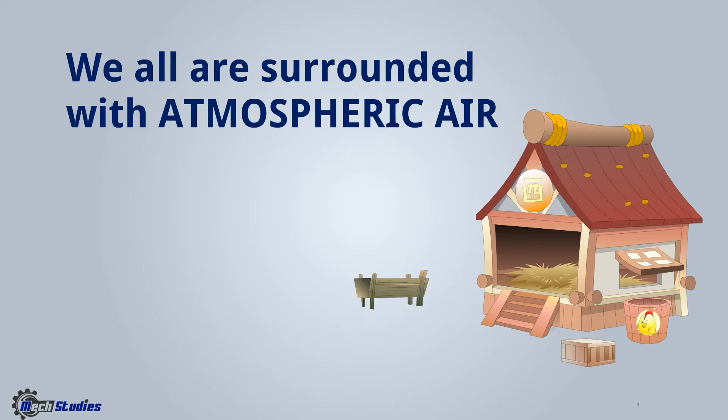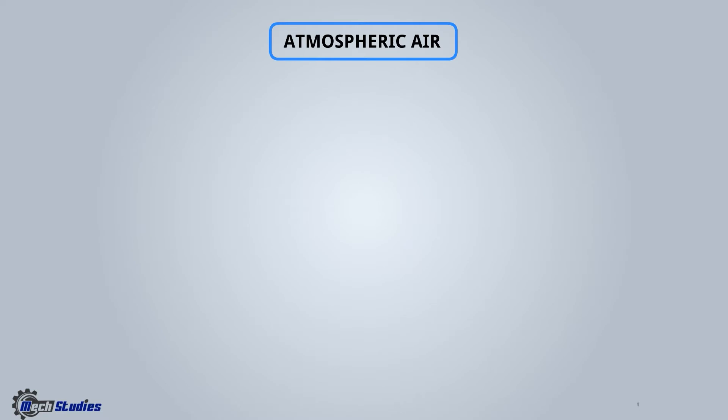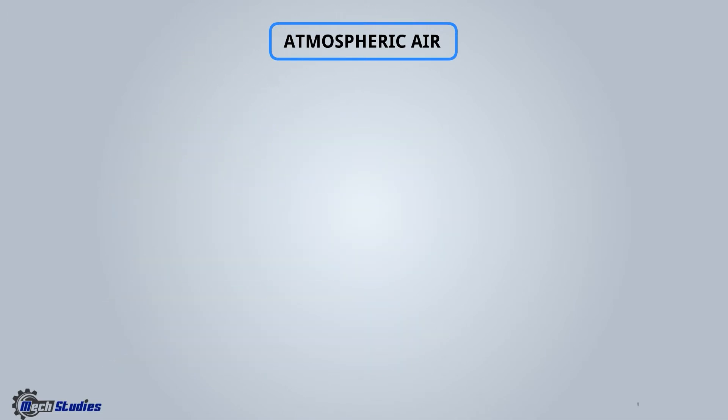So what does atmospheric air mean? Atmospheric air consists of three different things: permanent gases, pollutants, and moisture content. Let's see the basics of all these things, starting with permanent gases.